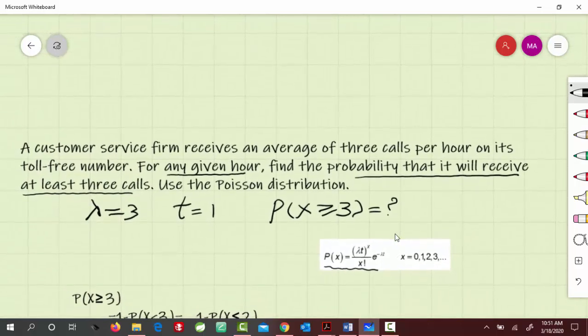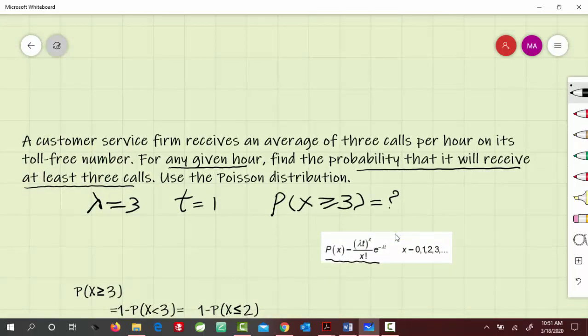First, we express P(x ≥ 3). This is the same as 1 minus P(x < 3) by the complement rule. P(x < 3) means P(x ≤ 2) in this case.